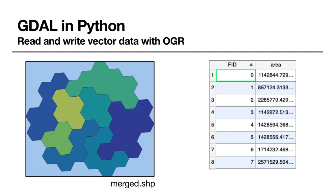Now let's start by opening a shapefile using Python and GDAL — specifically OGR, which is the simple feature library. It is part of GDAL and allows you to do all kinds of vector-related operations, so we will need that today.